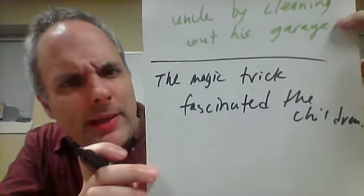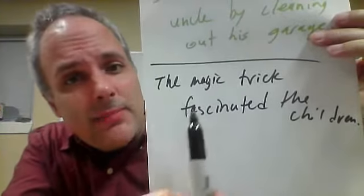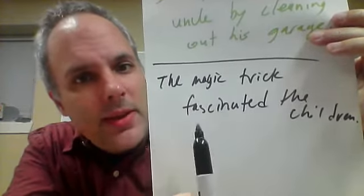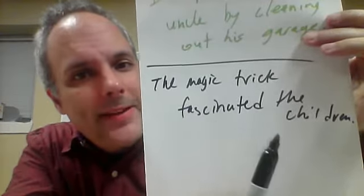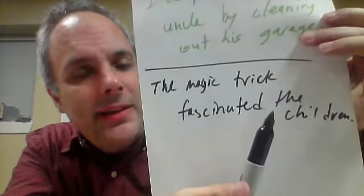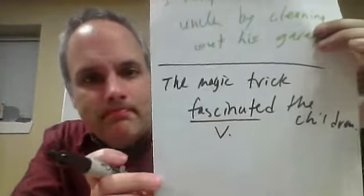The next word is fascinate. Fascinate can be a verb or an adjective. For example: 'The magic trick fascinated the children.' The subject is the magic trick, and fascinated is the verb — what did the magic trick do? It fascinated the children. This is a verb.